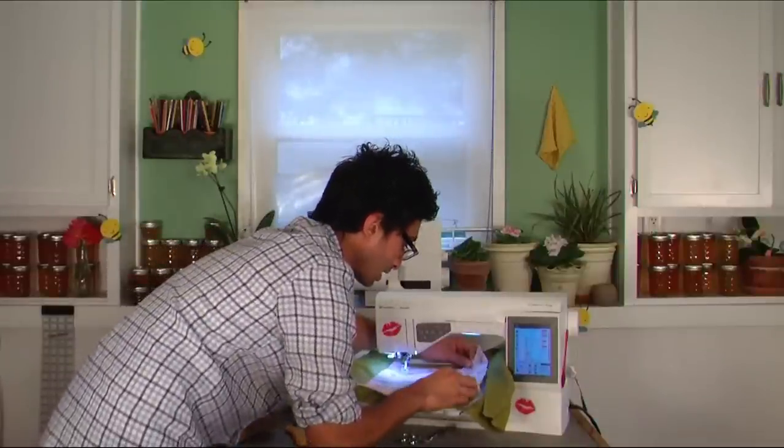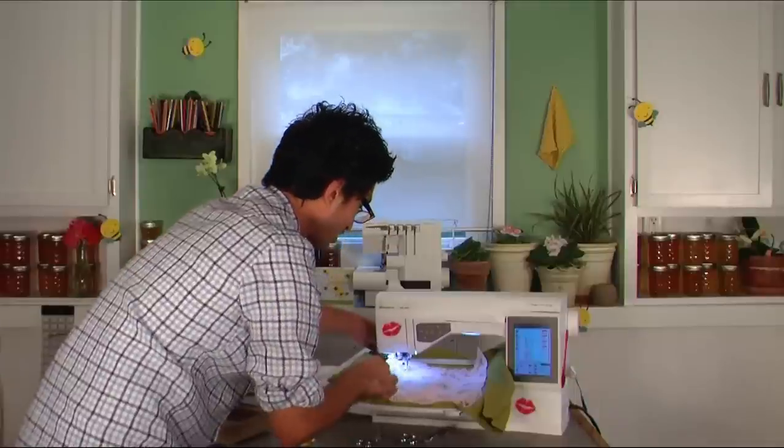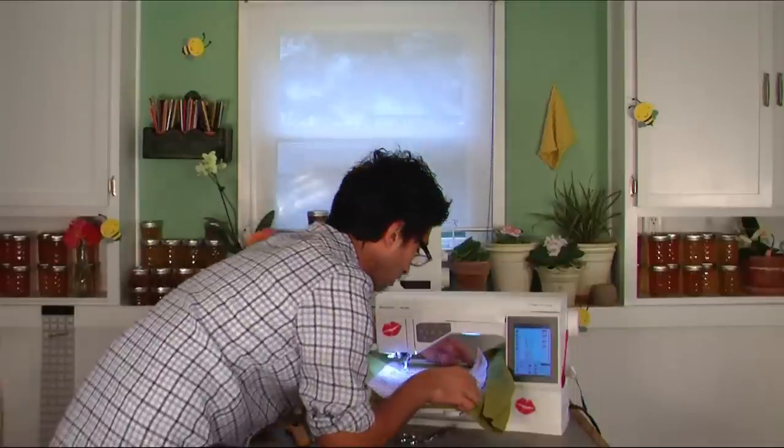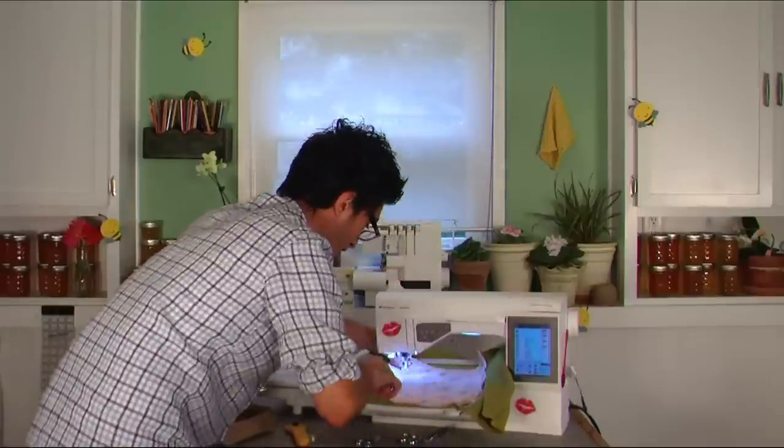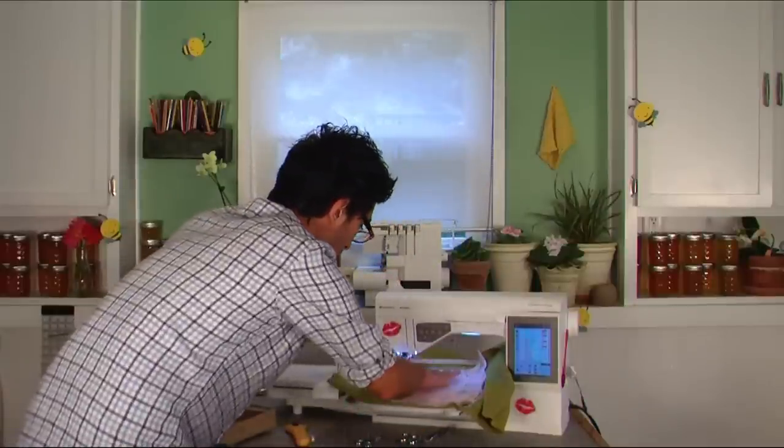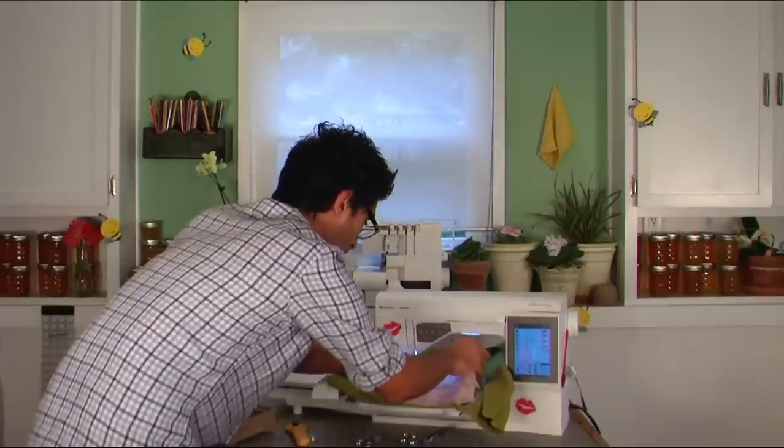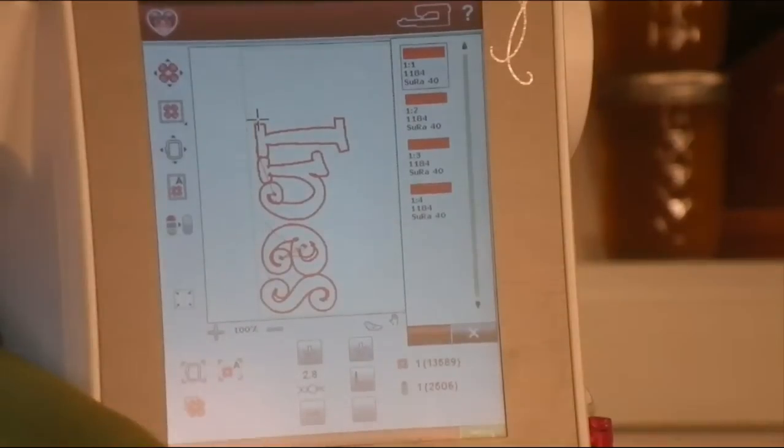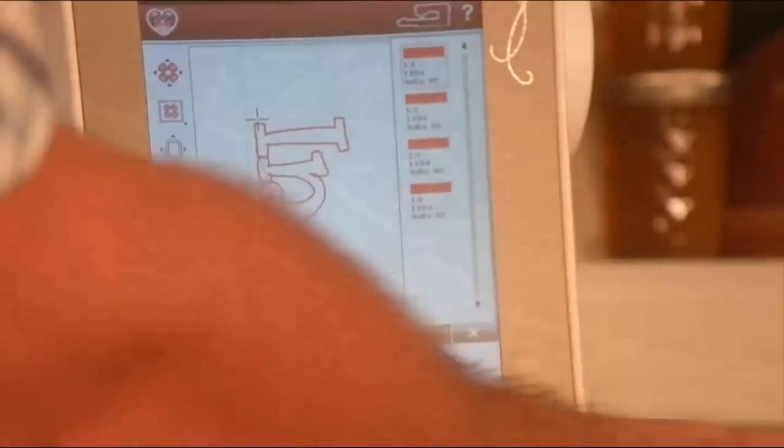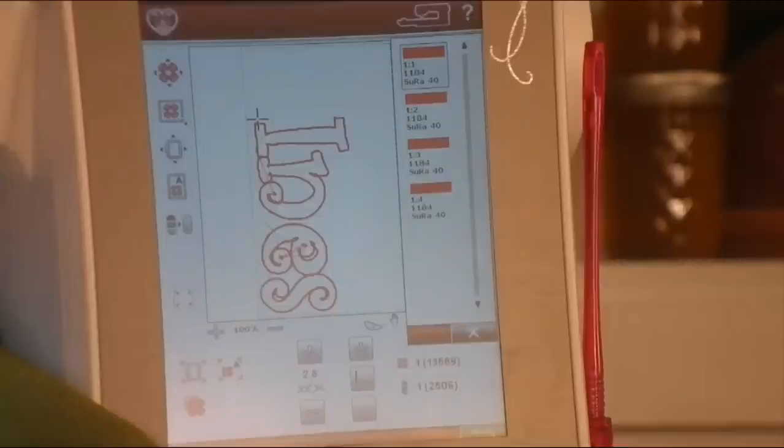But anyway, so here we go. I'm just going to go ahead and put this right down into the area where my appliqué is going to go, because the first thing that's going to happen is you're going to get an outline stitch. Smooth it out, make sure there are no air bubbles anywhere. All right, so you can go ahead and see you have your four letters, four different color blocks.